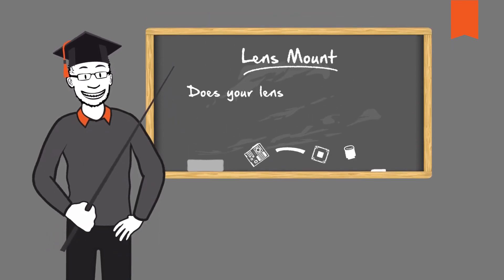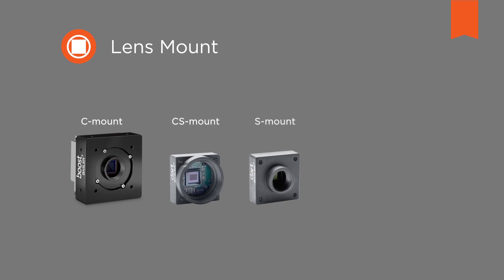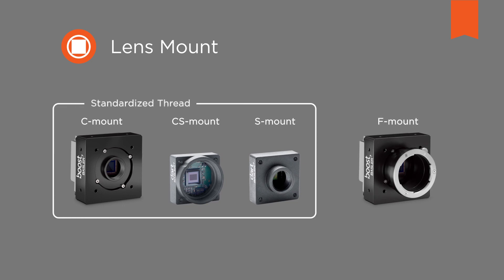Does your lens have the same mount as your camera? Well, first of all the lens has to fit on the camera. For this you need the right mount. C, CS, S and F mounts are common for industrial cameras. C, CS and S mounts have a standardized thread. The F mount has a bayonet system, as you have already encountered with your SLR camera.